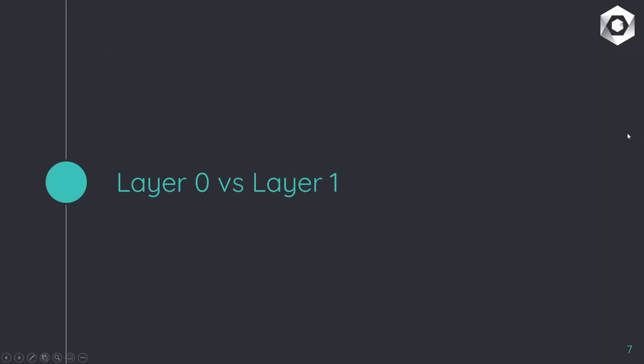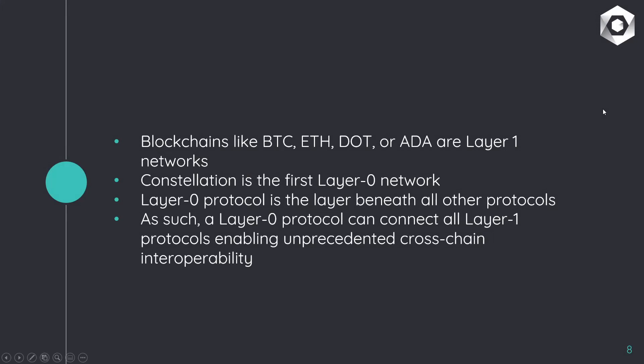Moving on to layer zero versus layer one: blockchains like Bitcoin, Ethereum, Polkadot, and Cardano are all what's called layer one networks. Constellation, on the other hand, is the first layer zero network. This layer zero protocol, as the name suggests, is the layer that lies beneath all of these layer ones, and as such it has the ability to connect all of them. Constellation's Hypergraph has the ability to connect Bitcoin's blockchain to Ethereum's blockchain to Cardano, enabling what's called cross-chain interoperability — the implications of that are massive.